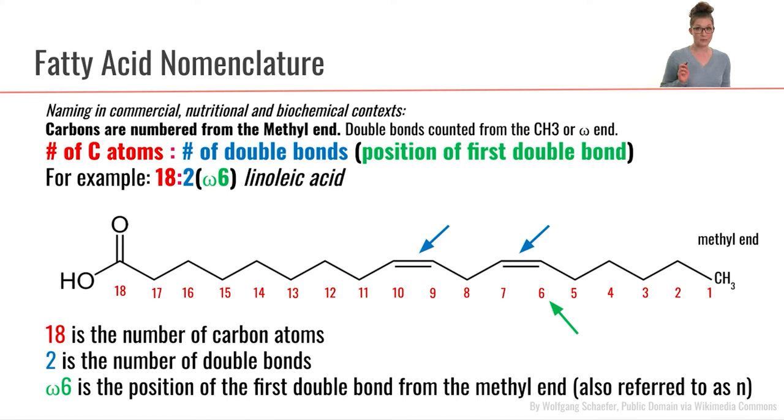In order to know where the first double bond is, we need to count the carbons in our fatty acid tail. So when we are counting the carbons in our fatty acid, we have to know which end to start at, which end counts as number one.